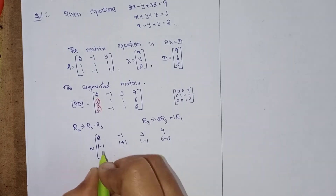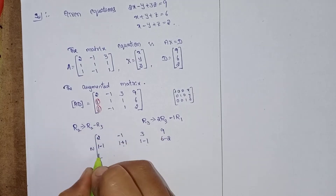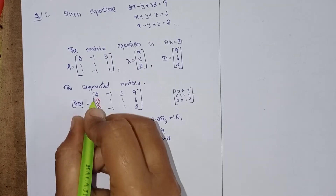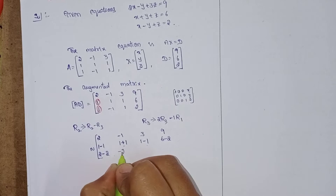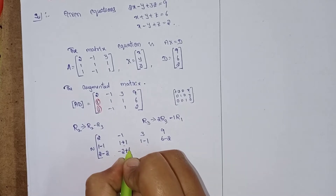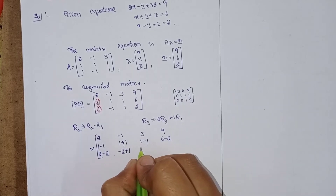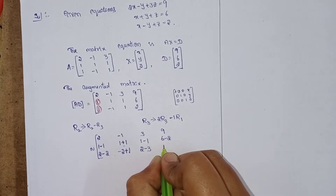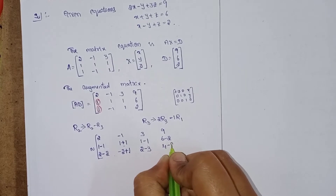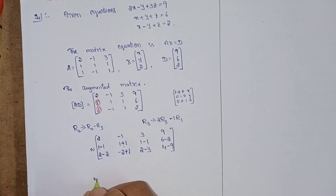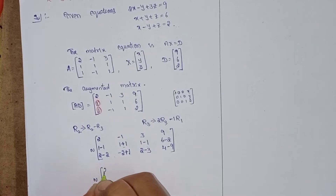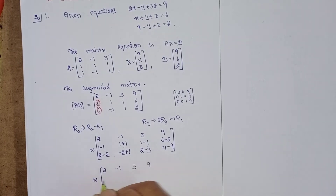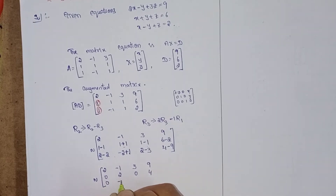After performing the row operations, the resulting augmented matrix is: Row 1: [-1, 3, 9], Row 2: [0, 2, 0, 4], Row 3: [0, -1, -1, -5].